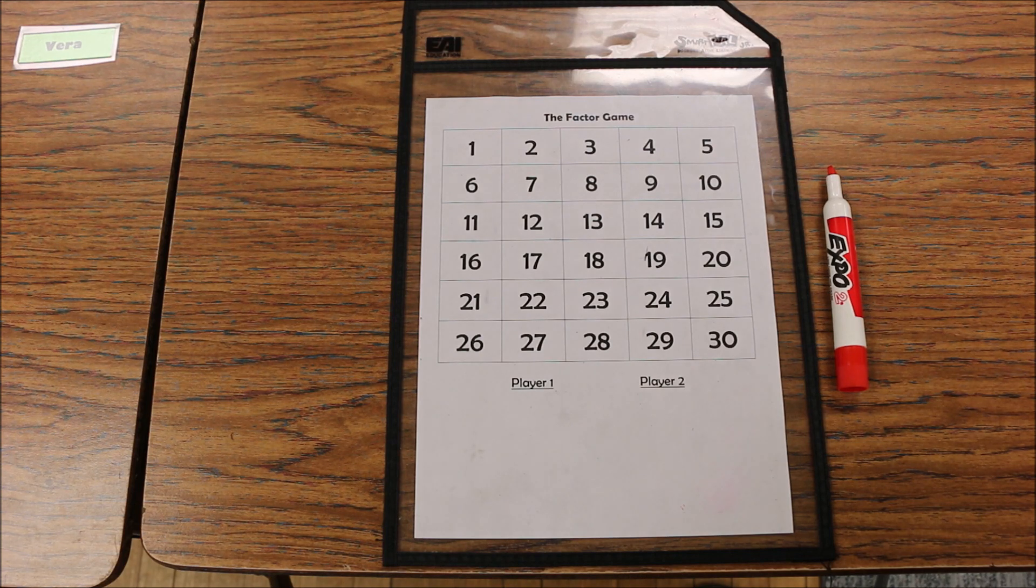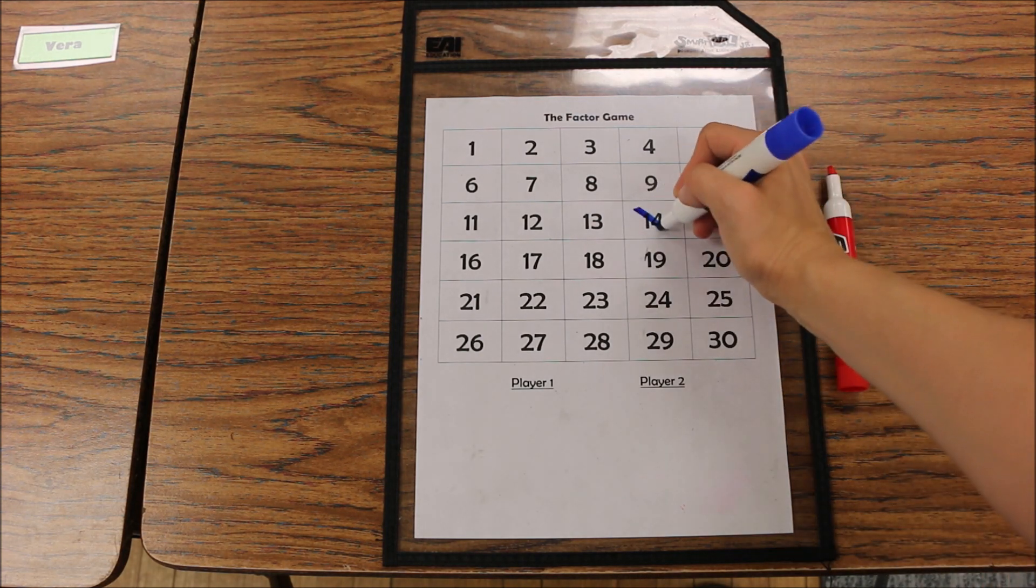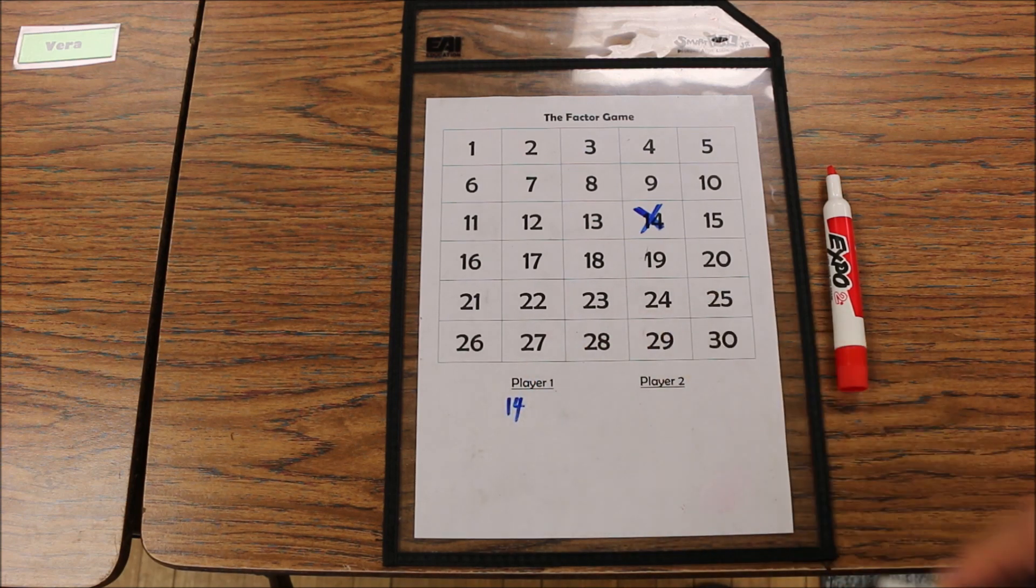Player 1 marks any number on the board and then they claim that number of points. So if player 1 marks 14, then they get themselves 14 points.